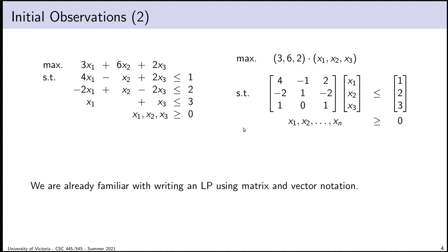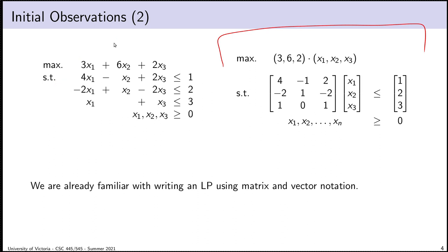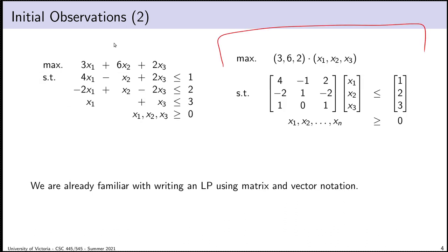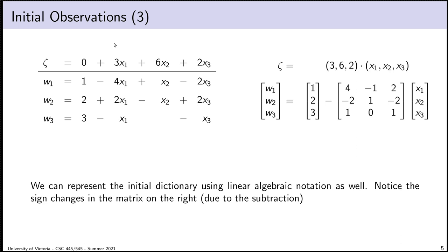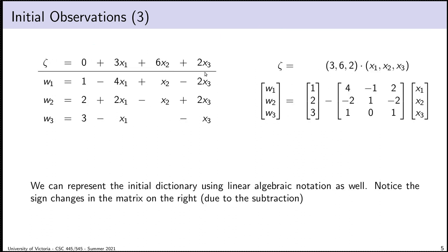We can expand out that linear algebraic representation to write all of the matrices and vectors explicitly. What I want to show is that not only can I do that with the LP, but I can actually do that with the dictionary. Here's the initial dictionary from the LP on the previous slide. Just like I can convert a table of numbers into matrices and vectors, I could convert the dictionary into that.